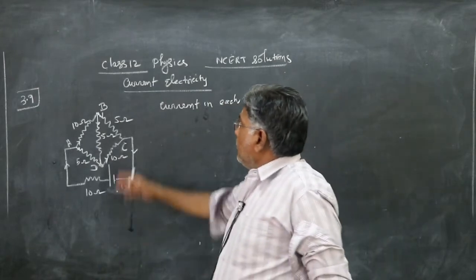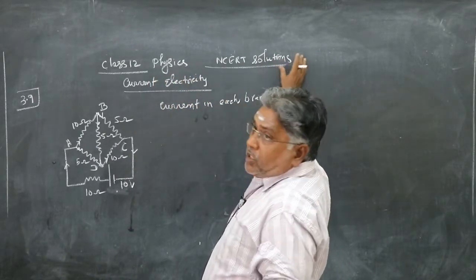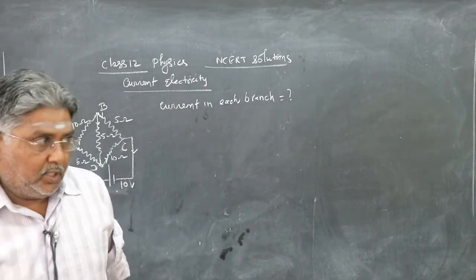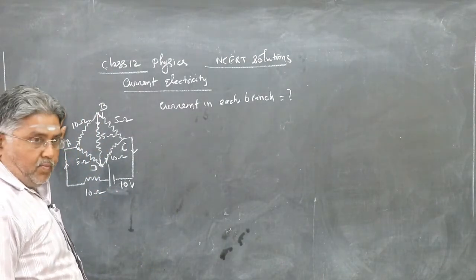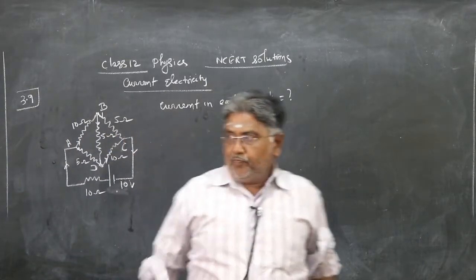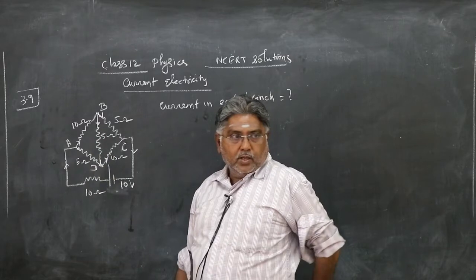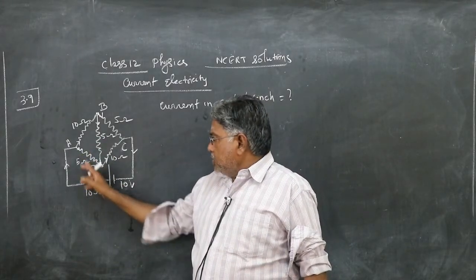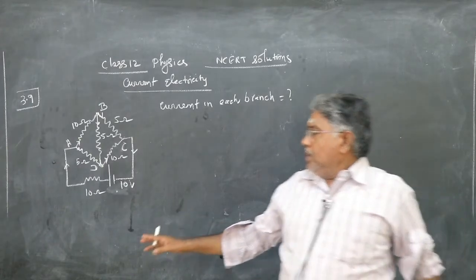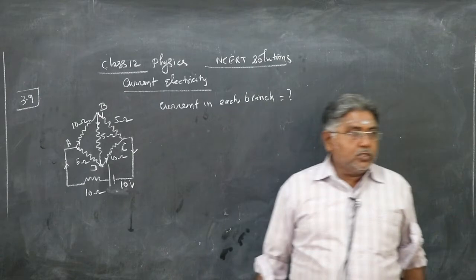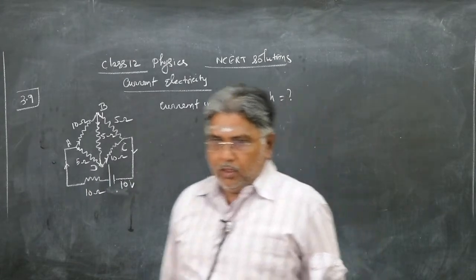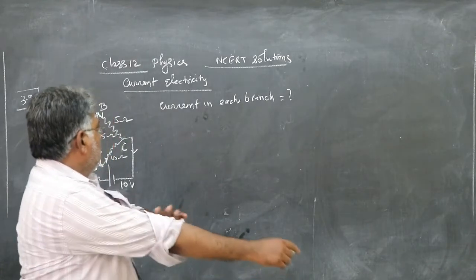We are going to see Class 12 Physics NCERT solutions on the topic of current electricity. Exercise 3.9 — this is the circuit given, and you know that this is a Wheatstone's bridge circuit. There are five resistors connected to another resistance and a battery as shown in the figure. We are supposed to find the current in each branch.